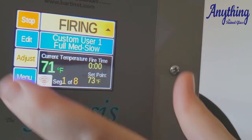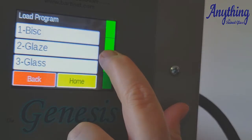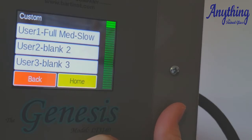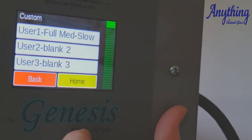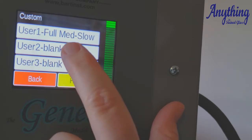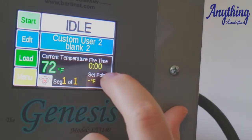Okay, so now let's show you how to program a ramp hold firing. So we're going to go back in here to load. We're going to scroll down to custom because we do want to customize it. Now, you can see where you already saved that full medium slow full fuse one in there. So let's start with user 2 because it's blank.